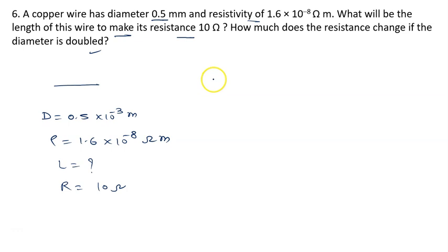Firstly we will solve the first part. R equal to rho L upon A. L is given by R into A upon rho. Value of R is 10 ohm. Area we have to calculate. Area is given to us pi r square, pi is 22 by 7, radius is half of the diameter. Diameter is 0.5 into 10 raised to the power minus 3, so radius is 0.5 divided by 2 into 10 raised to the power minus 3 whole square.